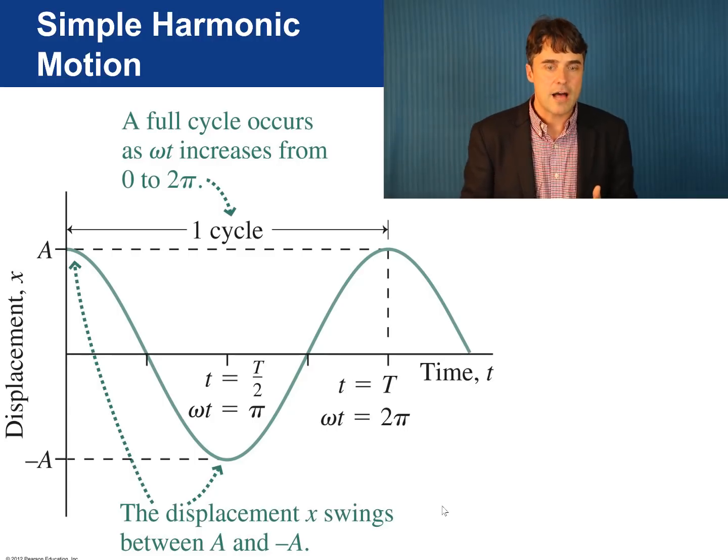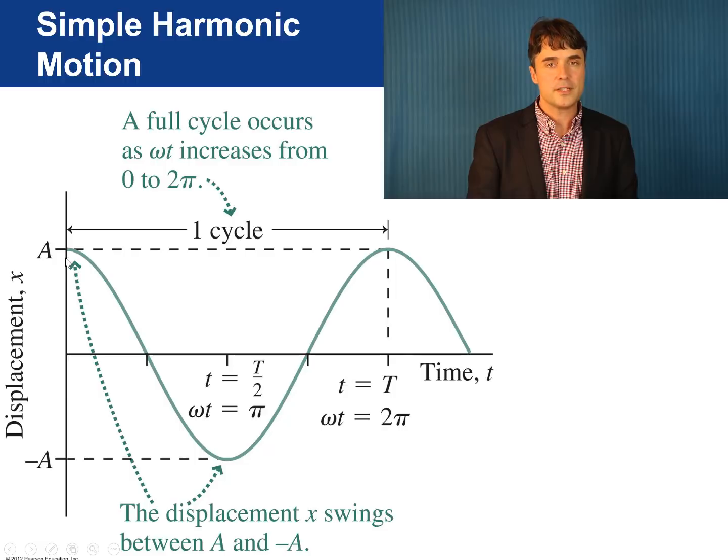Okay, here's a graph of the trial solution for position. This graph shows the special case in which phi equals zero. I'll talk more about phi later. If you've ever seen a cosine curve before, this should look familiar. It's kind of like a smile. When time equals zero, the position is at its maximum value, which is A. The quantity A is called the amplitude.